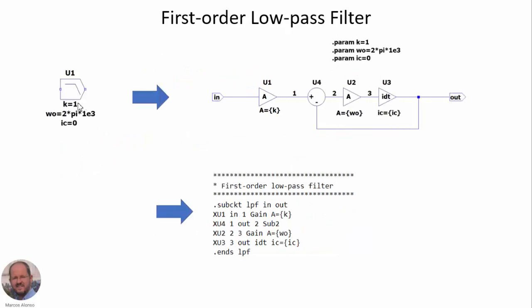Here we can see the implementation. This is our symbol for our component with the three parameters: the DC gain, the cutoff angular frequency, and the initial condition. Here is the same implementation as we have seen in the previous slide, and here is the description.